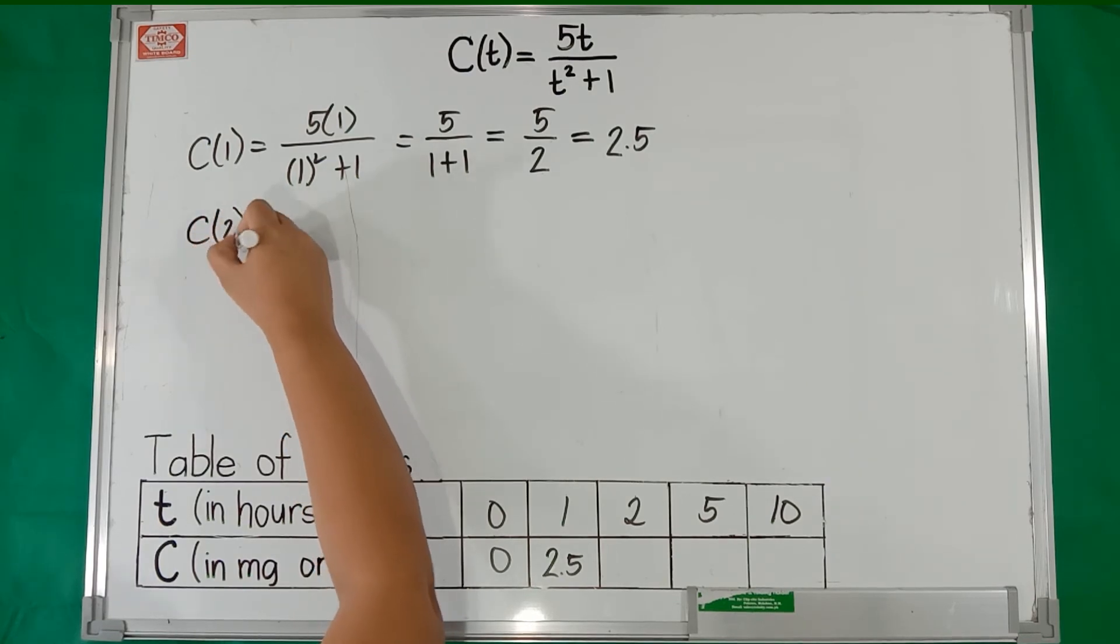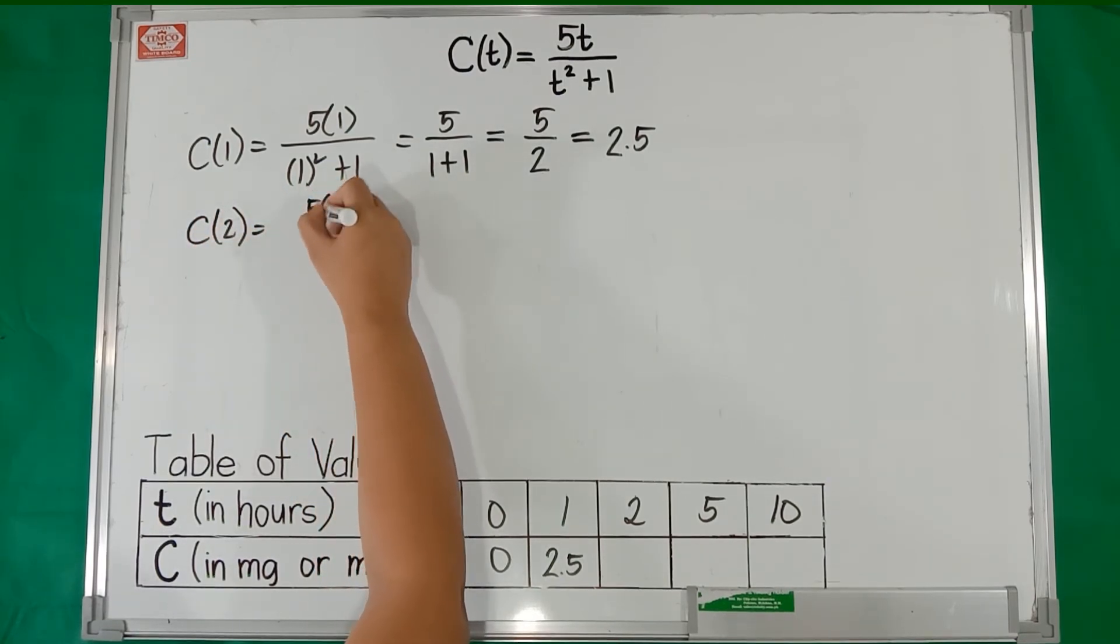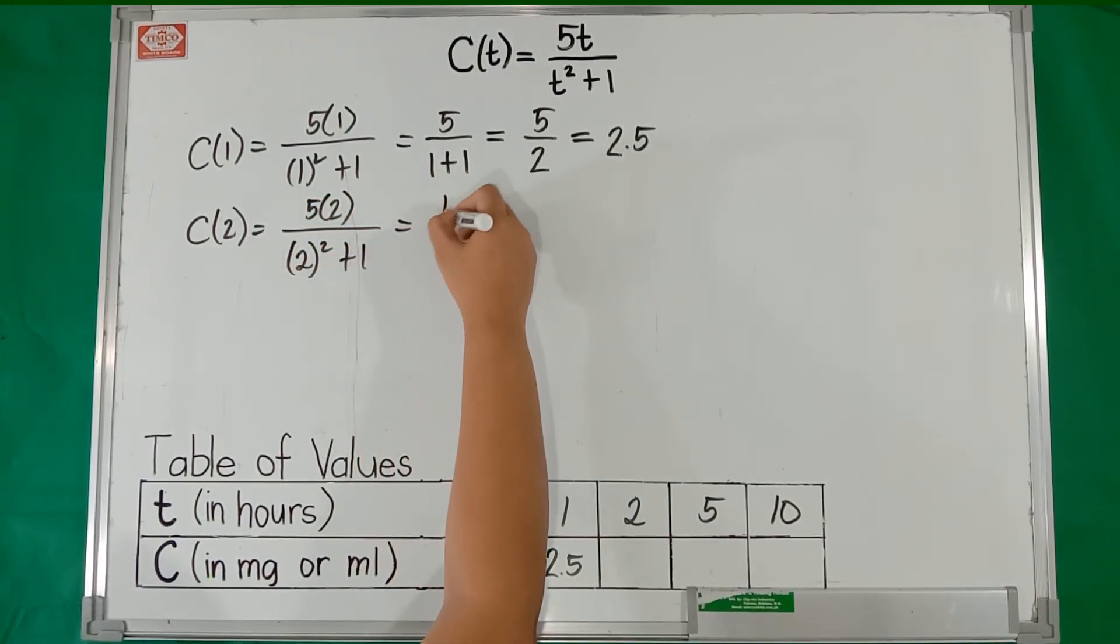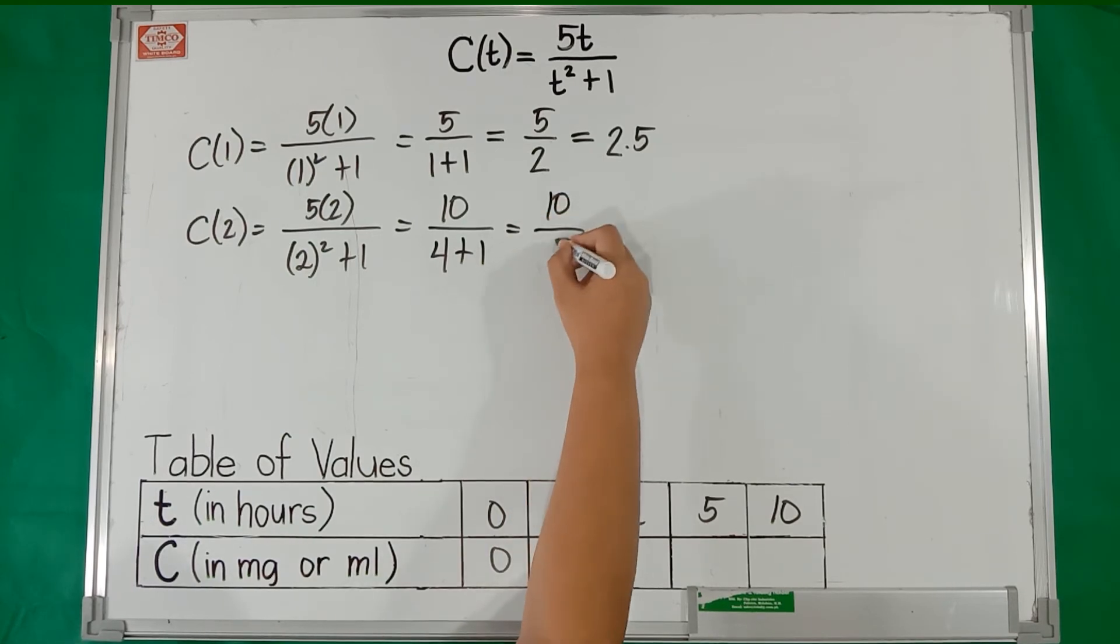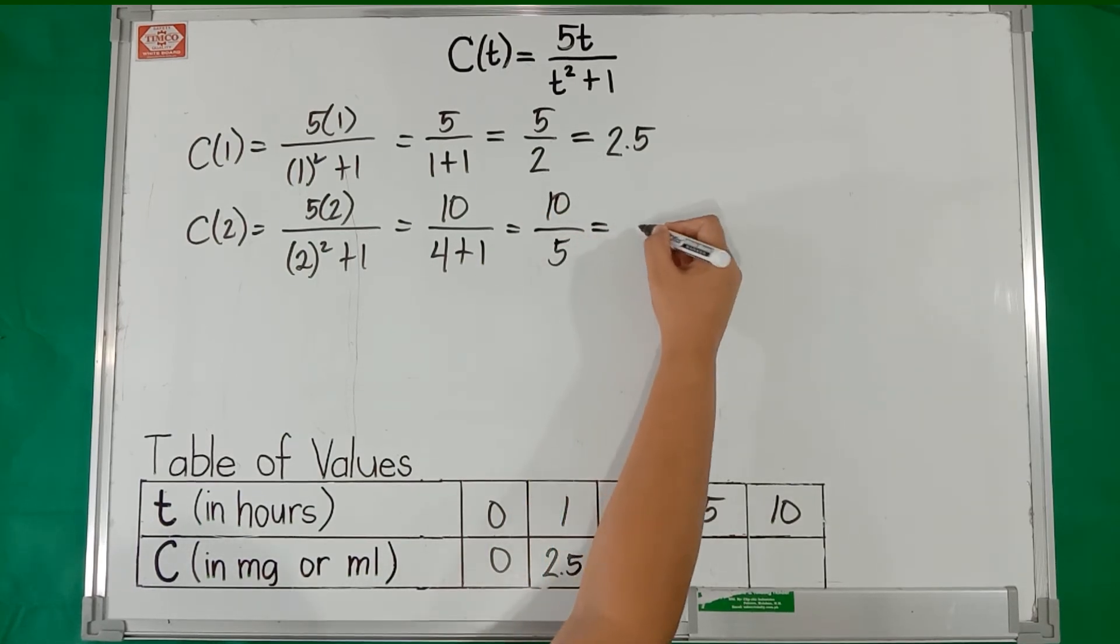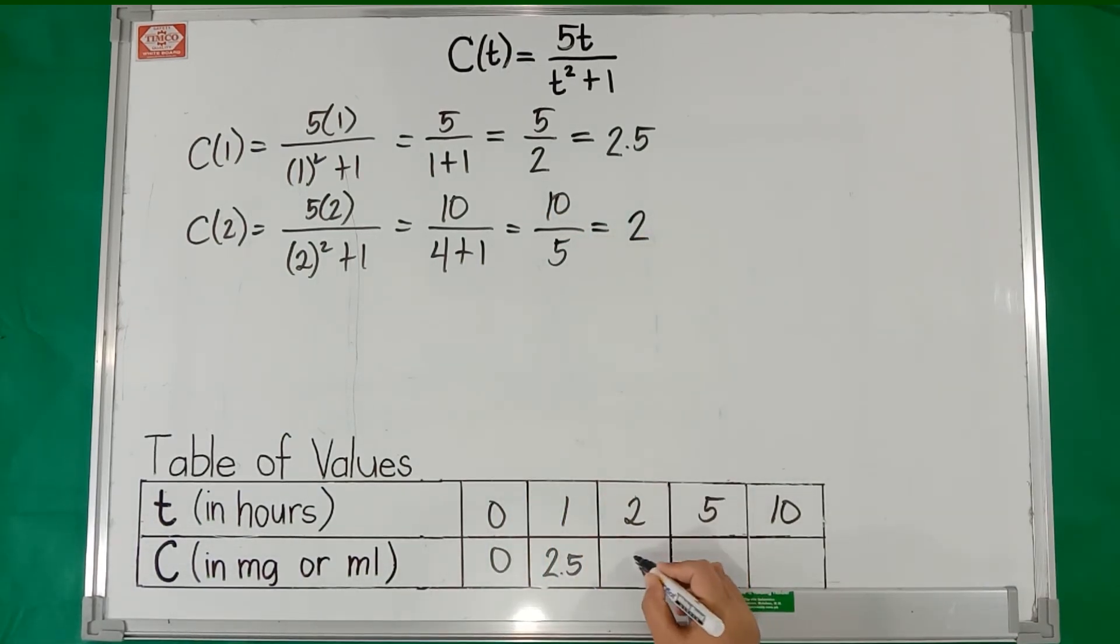Next, c(2) = (5 × 2)/(2² + 1) equals 5 times 2 is 10 over 2 squared is 4 plus 1 equals 10 over 5. 10 divided by 5 is equal to 2.